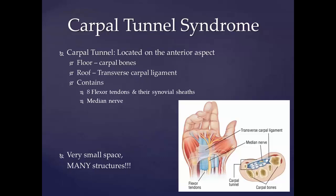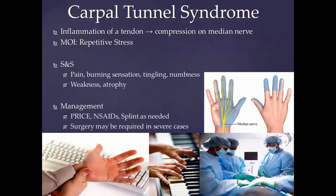Weak grip strength may occur, and after a long period of time, the muscles at the base of the thumb may waste away. In more than half of cases, both hands are affected. About 5% of people in the United States have carpal tunnel syndrome. It usually begins in adulthood, and women are more commonly affected than men. Up to 33% of people may improve without specific treatment over approximately one year.